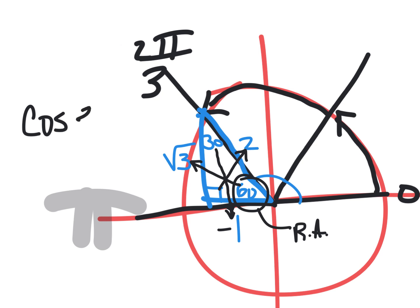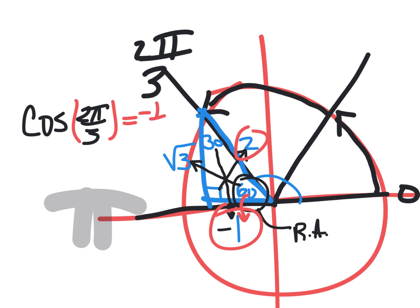Now that we've drawn that, it would be easy to ask: what is the cosine of 2 pi over 3? Cosine is CAH. Adjacent — it's right next door to the 60. Over hypotenuse. Negative 1 half. Raise your hand if you had negative 1 half. Okay, awesome.